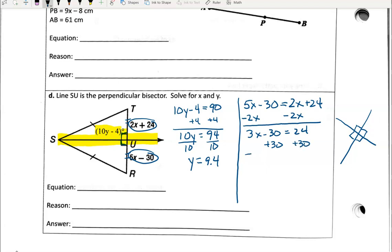Add 30 to both sides, and we have 3X is equal to 54. Divide both sides by 3, and we get that X is equal to 18. I think I did that right. If I didn't, let me know. So here's our values for Y and X.